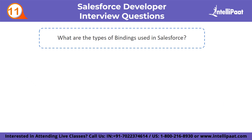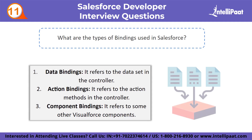Eleventh question: what are the types of bindings used in Salesforce? There are three types. First, Data Bindings, which refer to the dataset in the controller. Second, Action Bindings, which refer to the action methods in the controller. And last, Component Bindings, which refer to other Visualforce components.